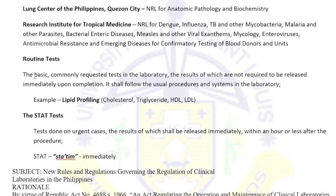Routine tests are done in clinical laboratories. Examples include glucose, lipid profile (cholesterol, triglycerides, HDL, LDL, VLDL), renal function tests (BUN, creatinine) which assess kidney capability, and liver function tests (AST, ALT).